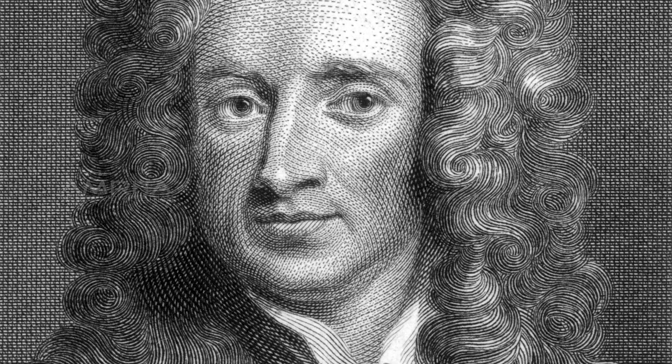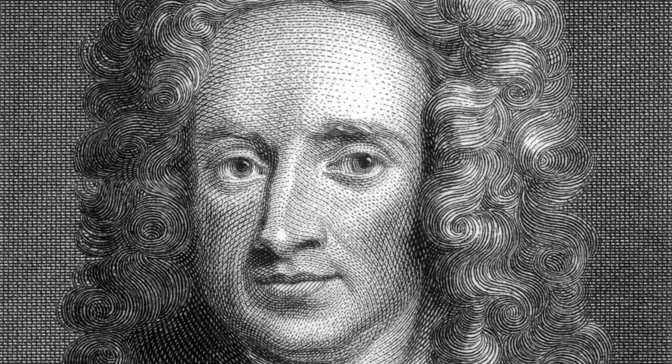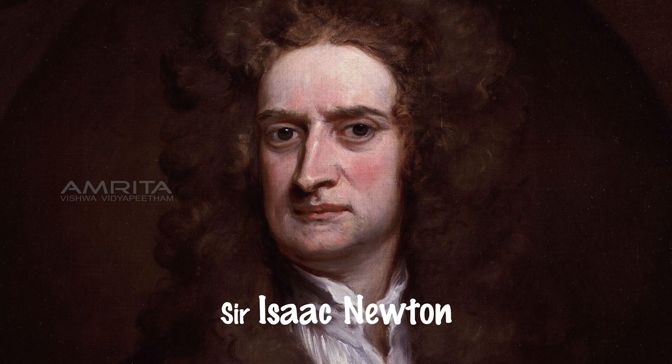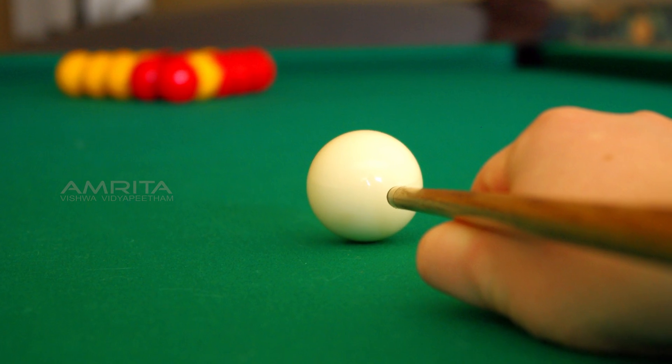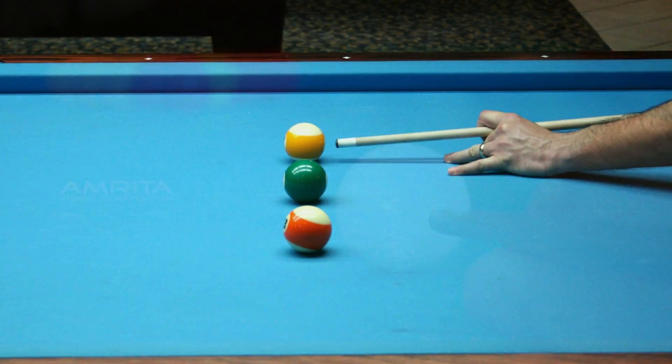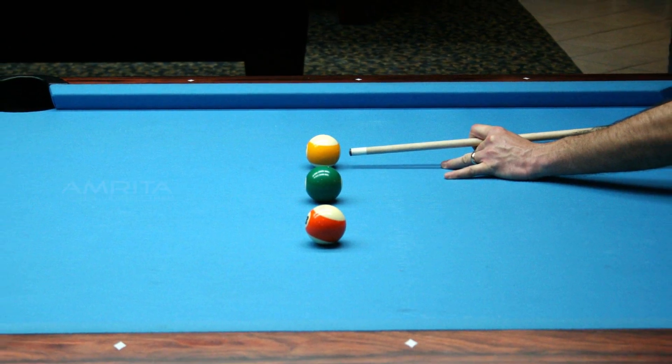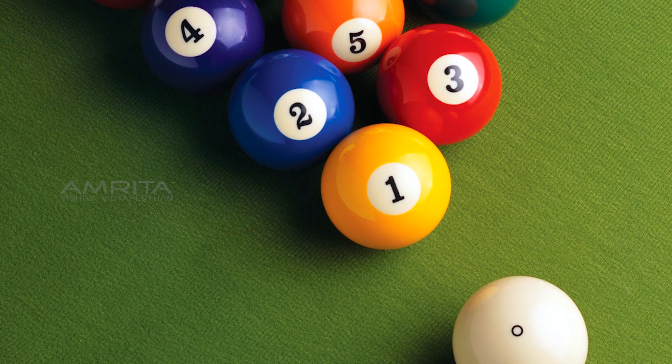Newton's second law of motion is one of the three laws of motion published by Sir Isaac Newton in 1687. The law explains the interaction of forces and objects and the way in which the motion of an object is affected by force.